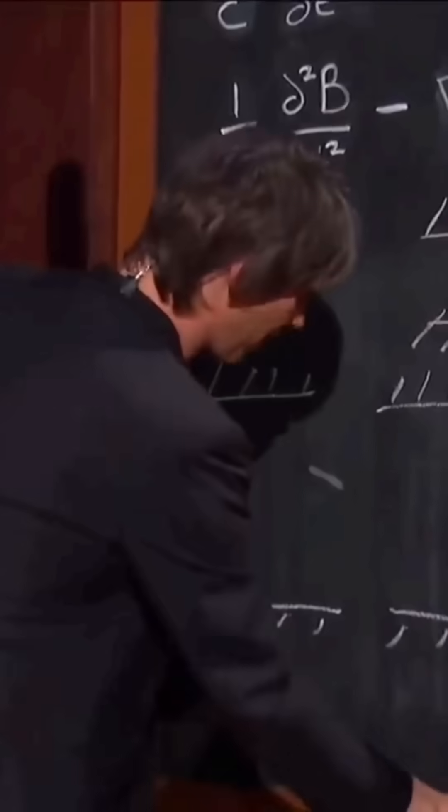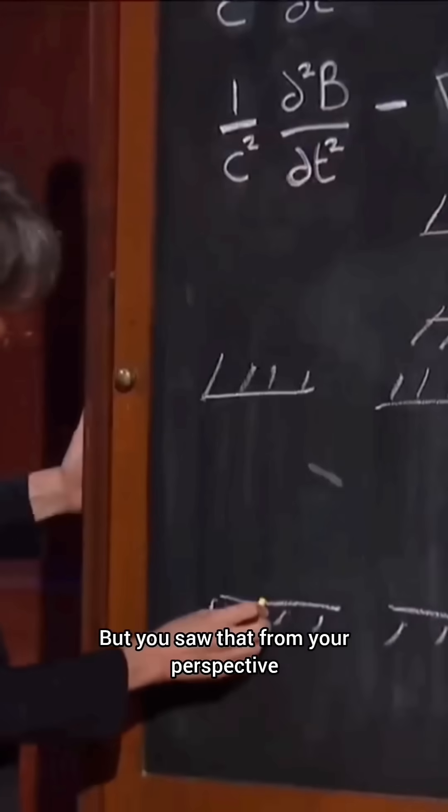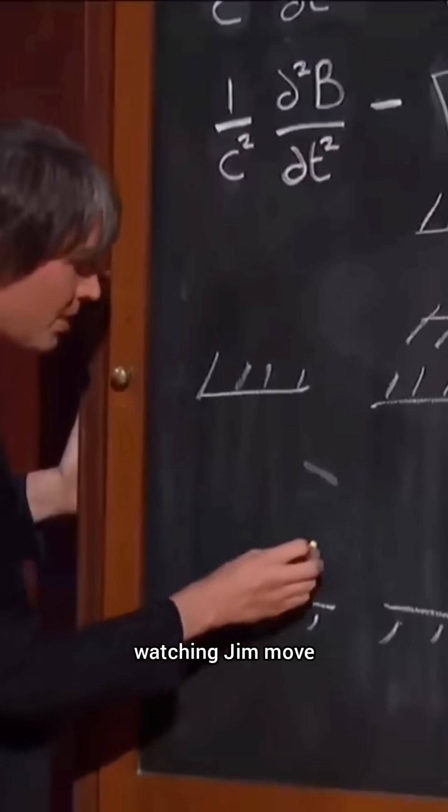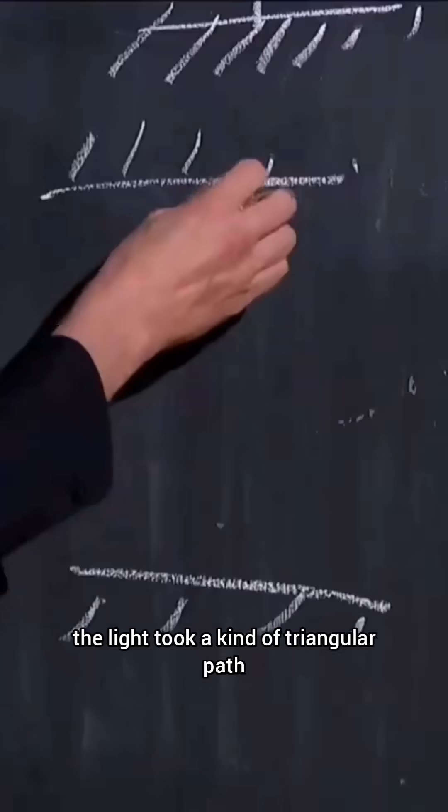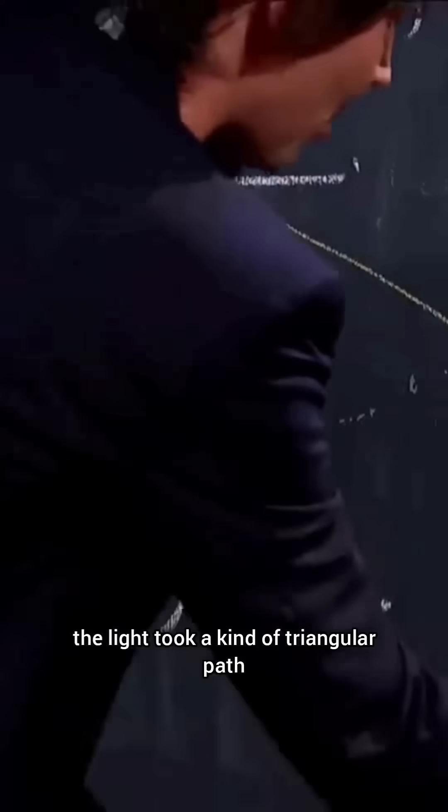We're stationary relative to Jim. But Jim is seeing, of course, the clock in exactly the way that we pictured it when it was stationary relative to us — the light beam is bouncing up and down between the mirrors. But from your perspective, watching Jim move, the light took a kind of triangular path as it bounced across the stage between the mirrors.